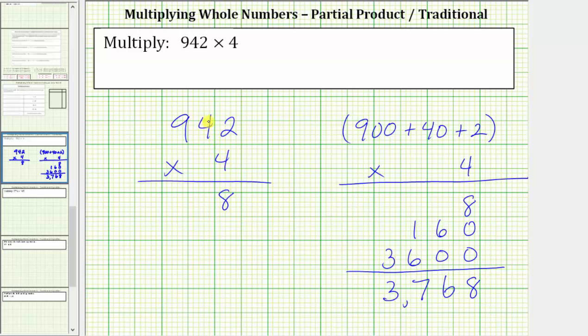Next, we multiply the four and the four. Four times four is equal to 16. We record a six in the tens place value and perform an exchange in place of one in the hundreds place value.